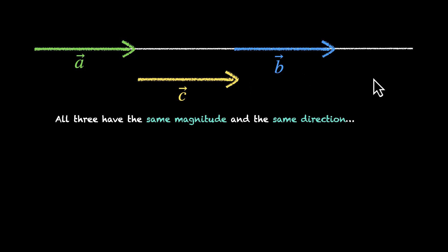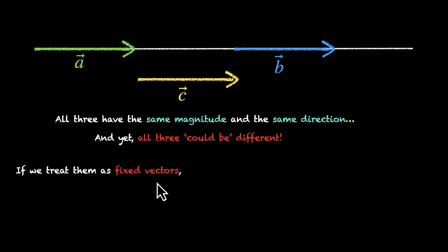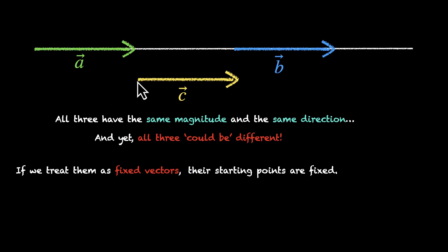Are all three equal or are they different? At first you might think that all three of them are equal, and they may be equal — but that's not always the case. That's where types of vectors come into play. All three of them have the same magnitude and the same direction, and yet all three could be different. If we treat these three vectors as fixed vectors, the starting points are fixed. A's starting point is this, B's starting point is this, and C's starting point is this. Because all three of them have different starting points, none of them are equal — all three are different fixed vectors.